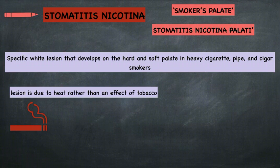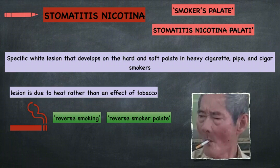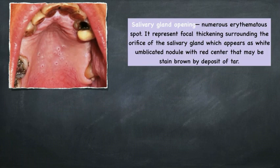In many cultures, hand-rolled cigarettes or cigars are smoked with the burning end held within the mouth. This habit is called reverse smoking, and the lesion associated with it is called the reverse smoker's palate. Since you're holding the burning end inside the mouth, lesions are produced because of the heat rather than the effect of tobacco. Stomatitis nicotina is also called the reverse smoker's palate.